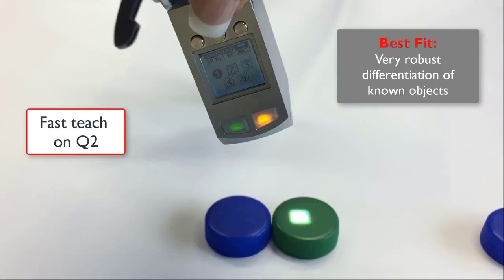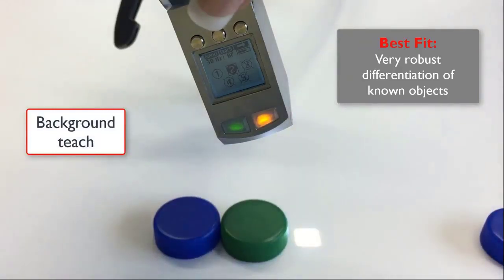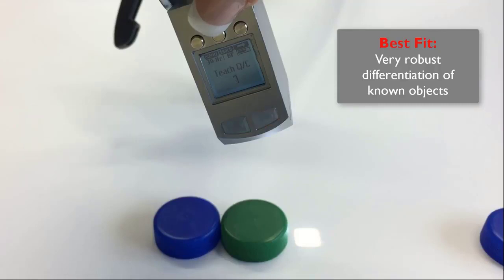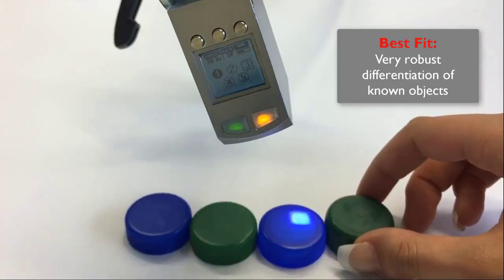Teach color two. We'll press and hold for more than three seconds. Two, one. We've taught green. Now we'll teach the background. Press and hold teach. Three, two, one. Okay. And now we'll check it. One, two.